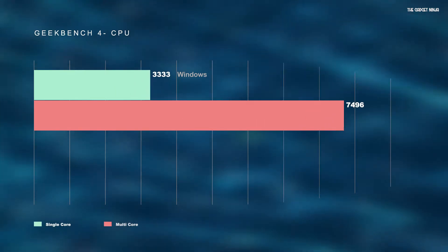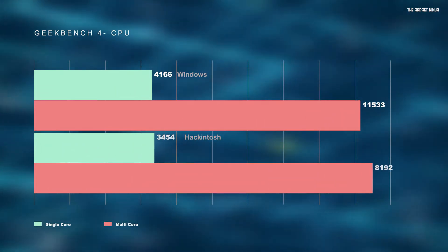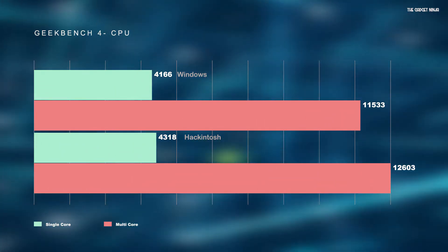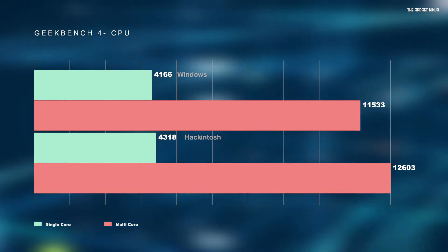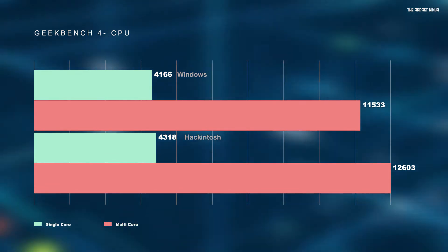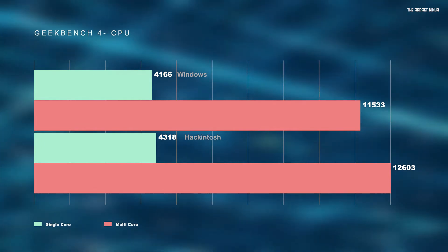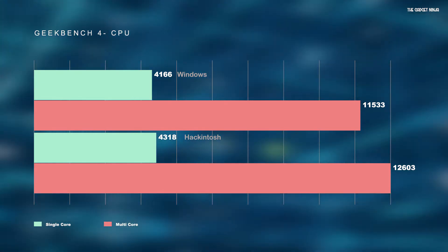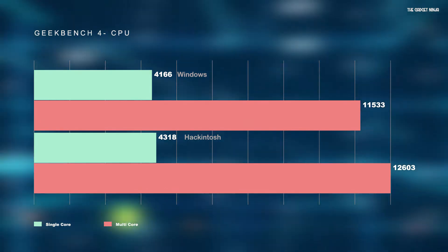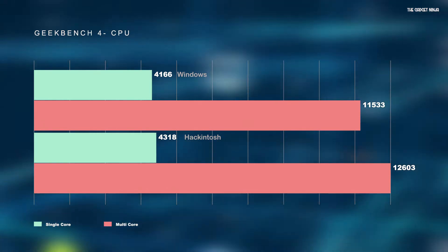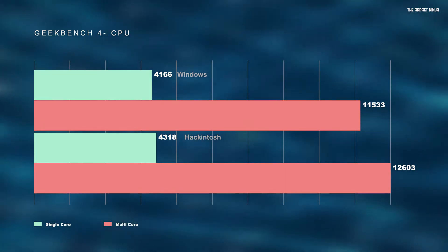I ran Geekbench 4 first and to my surprise, the Hackintosh beat the Windows machine here. Windows scored 4166 on single core and 11533 on multicore, whereas the Hackintosh scored 4318 on single core and 12603 on multicore. So there's quite a bit of difference between Windows and Hackintosh here.